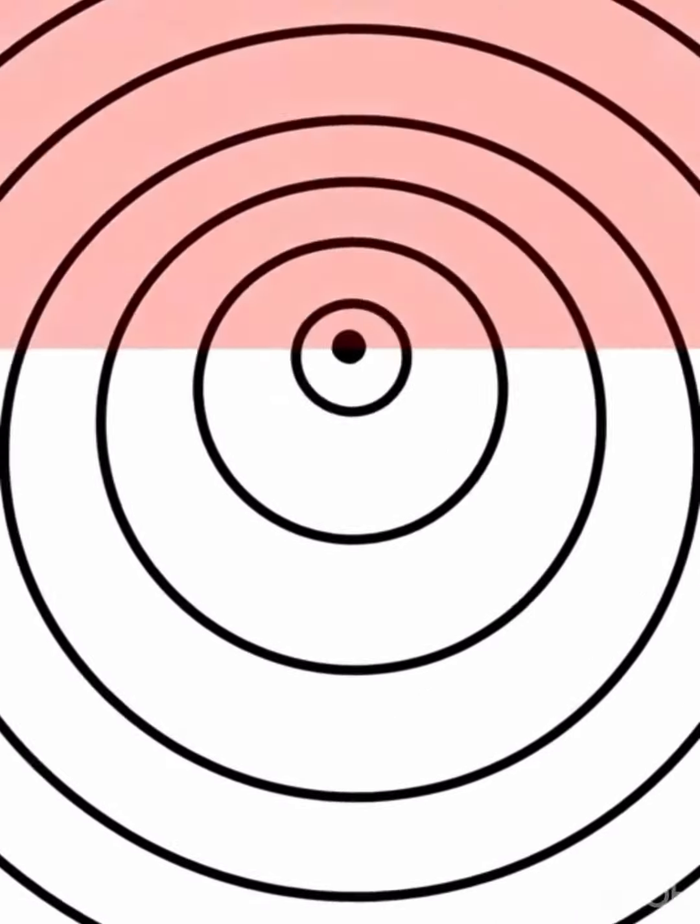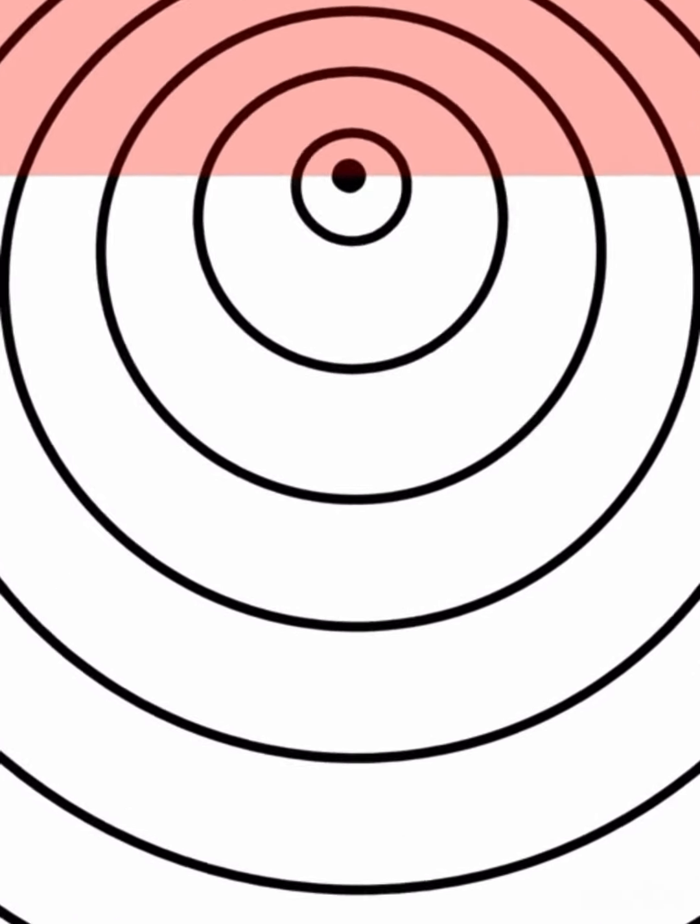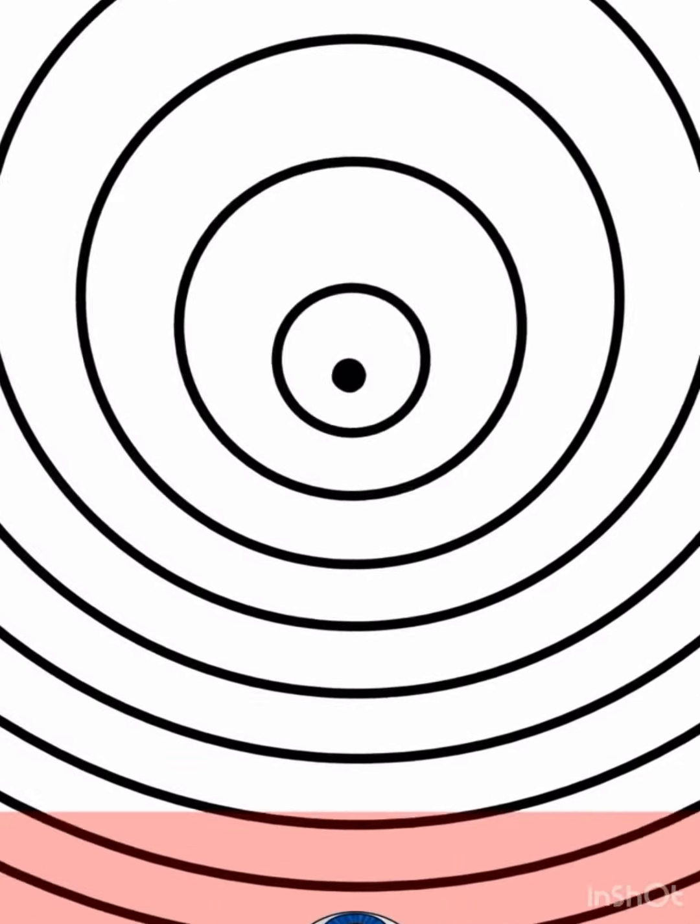The reason for Doppler effect is that when the source of the waves is moving towards the observer, each successive wave crest is emitted from a position closer to the observer than the crest of the previous wave.